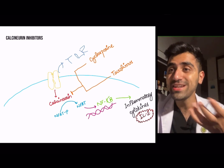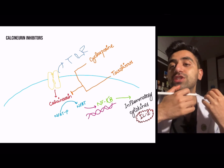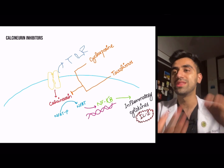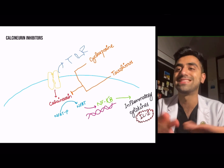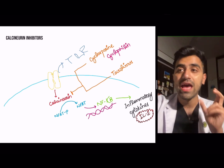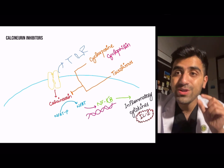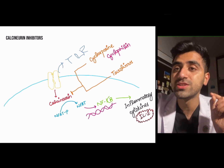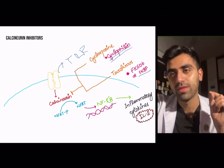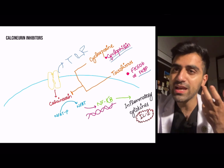The calcineurin inhibitors are cyclosporine and tacrolimus. They inhibit the transcription of inflammatory cytokines, particularly IL-2. Cyclosporine and tacrolimus both inhibit calcineurin, but they bind to different things. Cyclosporine binds to cyclophilin, and tacrolimus binds to FK506 or FK binding protein (FKBP).